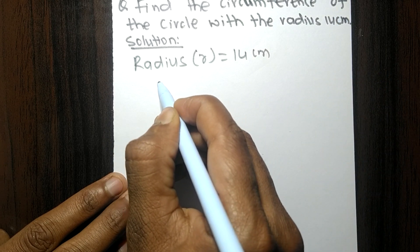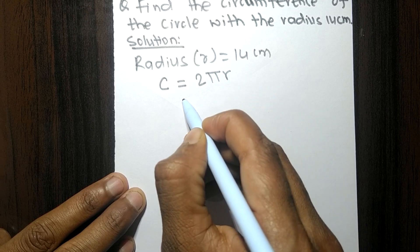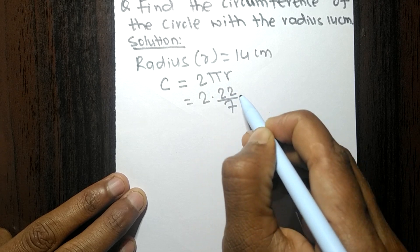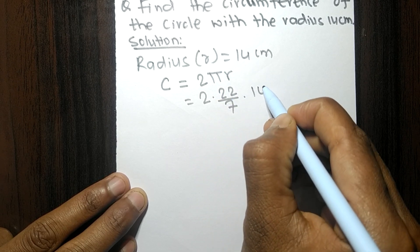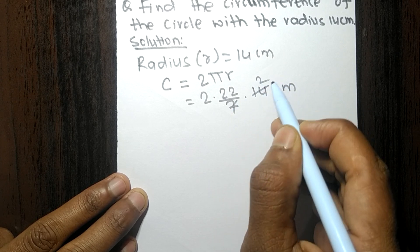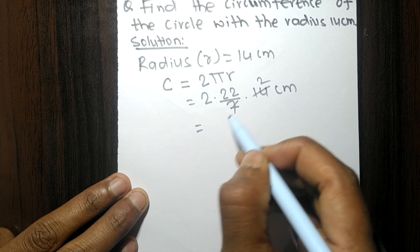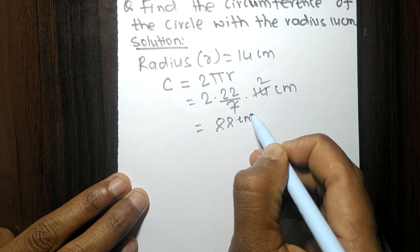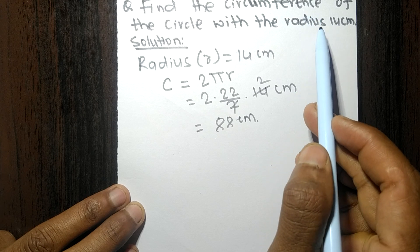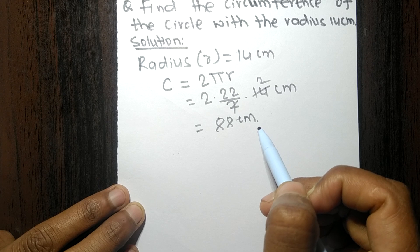The circumference of a circle is equal to 2πr, where π is 22/7 and the radius is 14 centimeters. Since 7 times 2 equals 14, it simplifies: 2 times 22 equals 44, and 44 times 2 equals 88 centimeters. So the circumference of a circle having a radius of 14 centimeters is 88 centimeters.